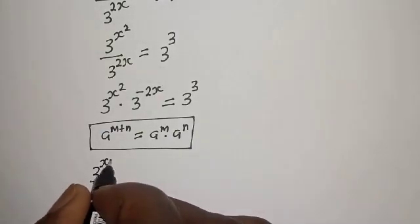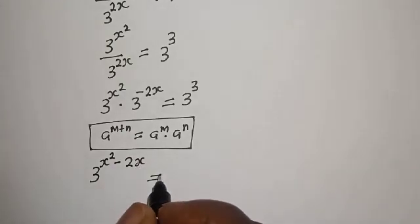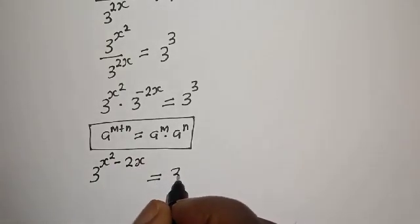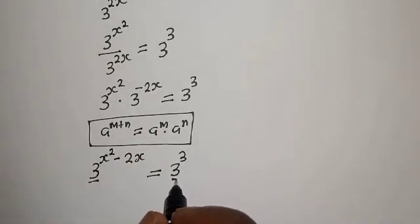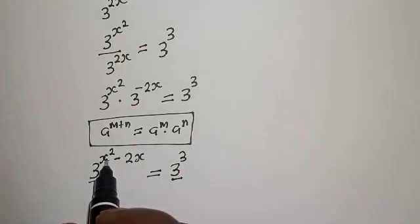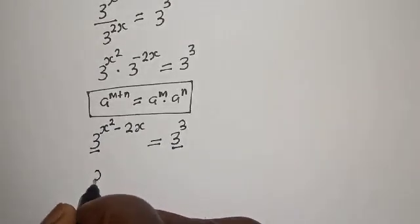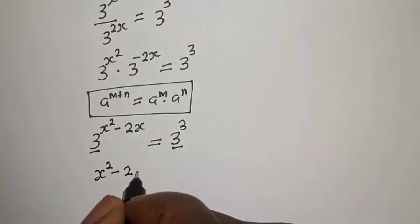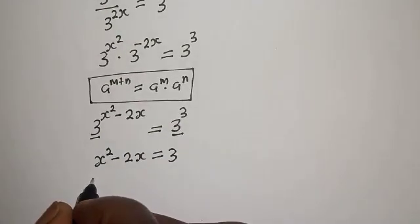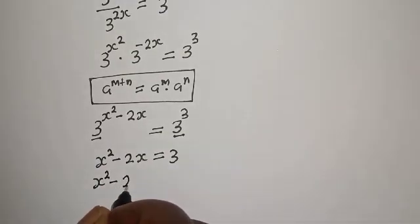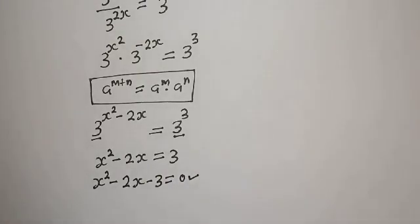So we get 3 raised to power s squared minus 2s is equal to 3 raised to power 3. The left hand side has base 3 and the right hand side has base 3, so we equate the exponents: s squared minus 2s is equal to 3. Rearranging: s squared minus 2s minus 3 is equal to 0. This is a quadratic equation.